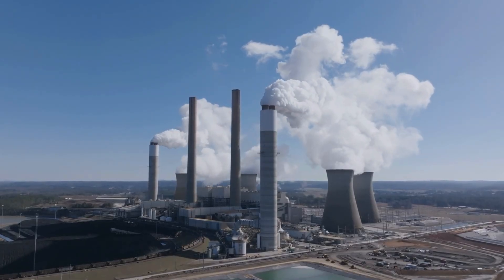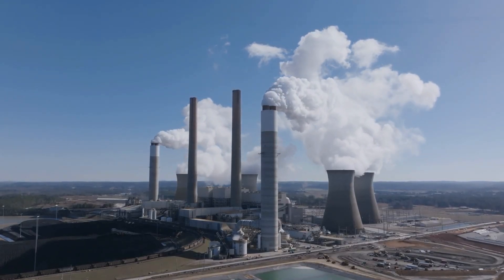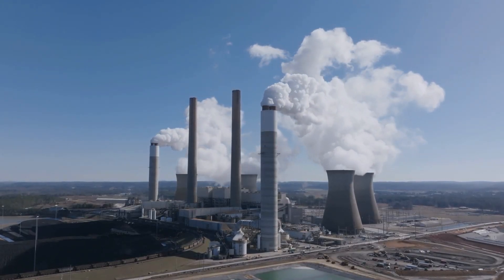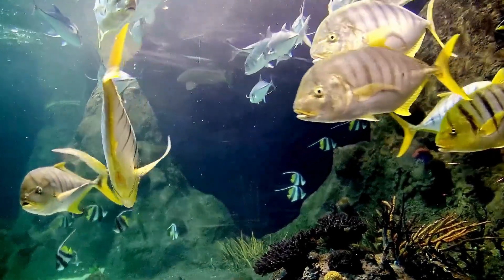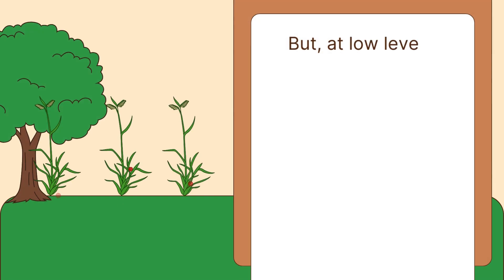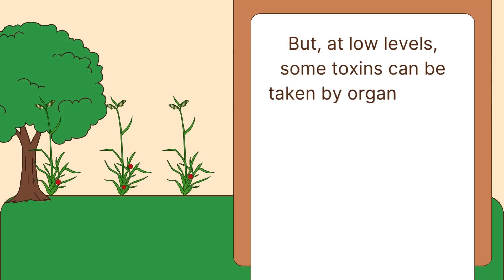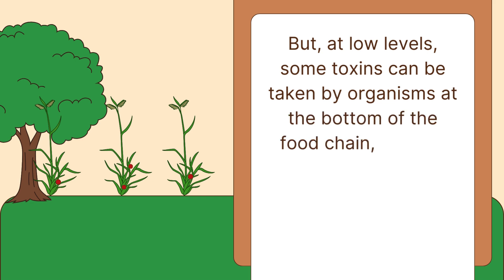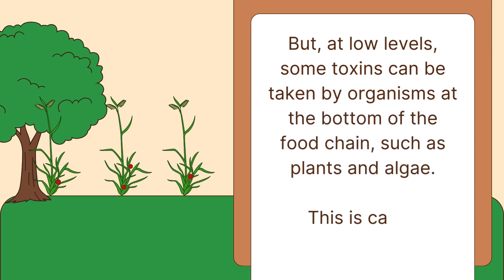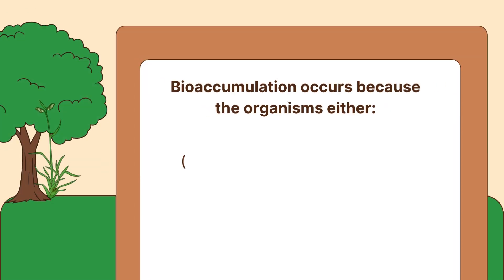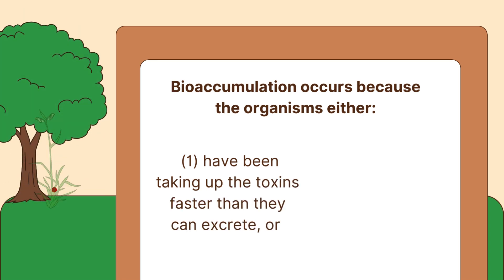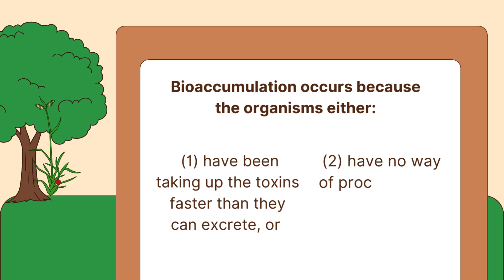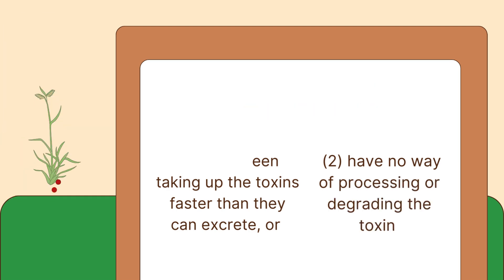But this delicate balance is under threat, with different natural events and human activities introducing toxins into the environment. Most toxins are excreted and do not stay in the organisms. But at low levels, some toxins can be taken up by organisms at the bottom of the food chain, such as plants and algae. This is called bioaccumulation. Bioaccumulation occurs because the organisms either have been taking up the toxins faster than they can excrete, or have no way of processing or degrading the toxin.